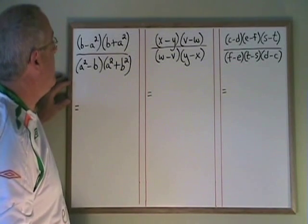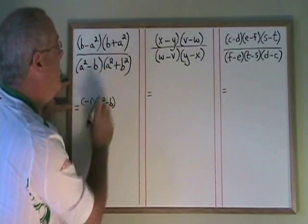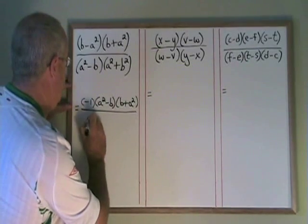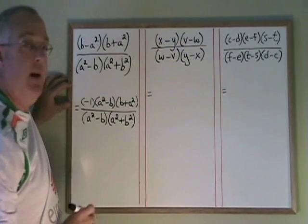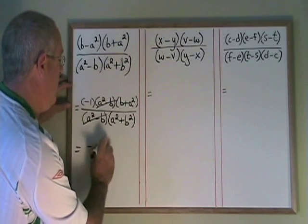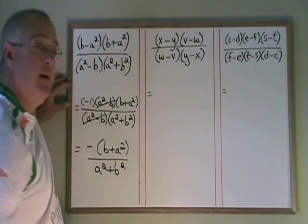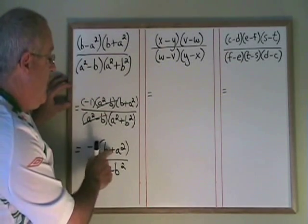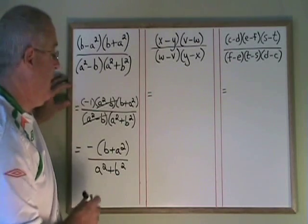If I decide to factor out a minus 1 from b minus a squared, I get a squared minus b. The b plus a squared will stay the same, and everything on the bottom will stay the same. Now the a squared minus b cancels top and bottom, and my final answer is negative b plus a squared over a squared plus b squared. It's tempting to try to cancel things here, but these two binomials are not the same — b plus a squared is different because the b is not squared, whereas on the bottom a squared plus b squared has b squared. They are not the same binomial. This is the final answer.